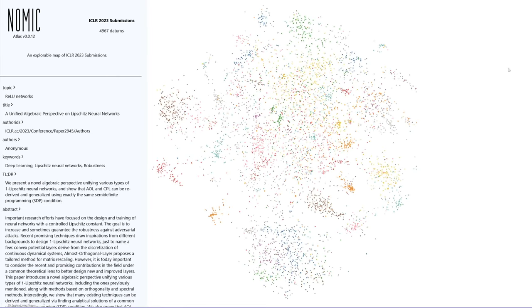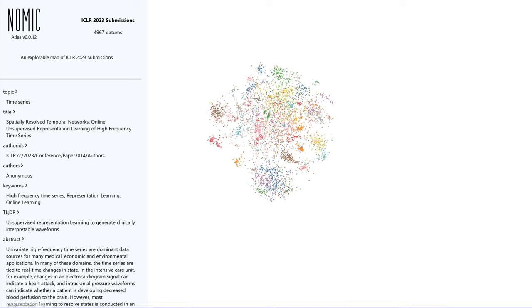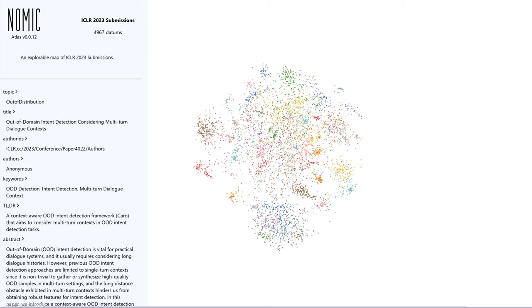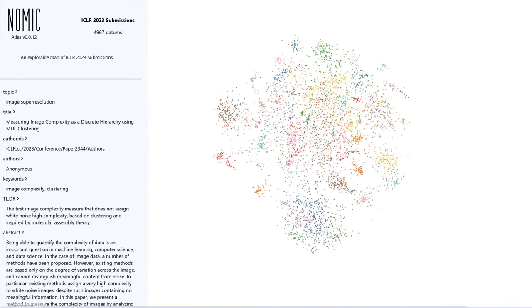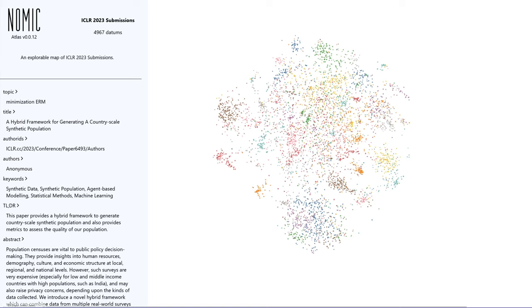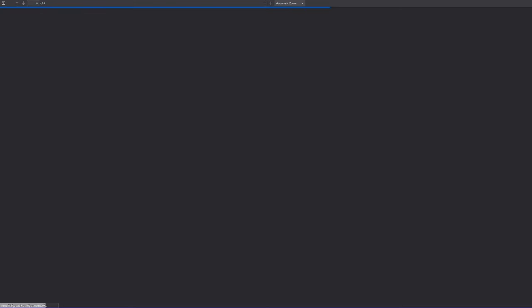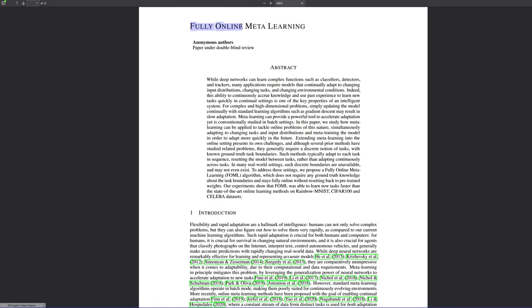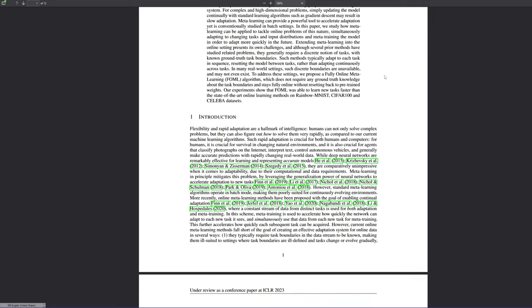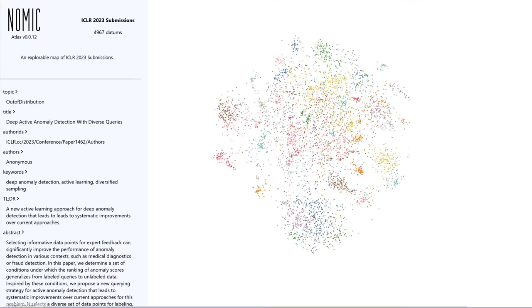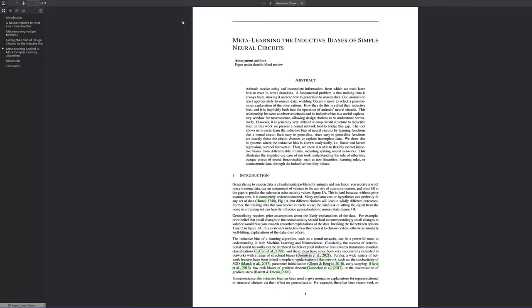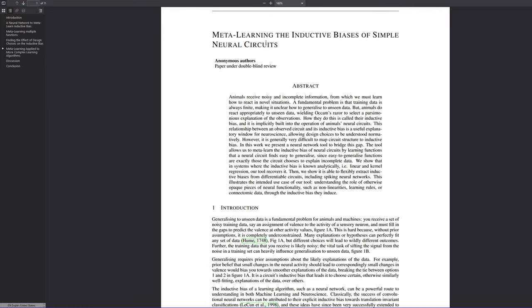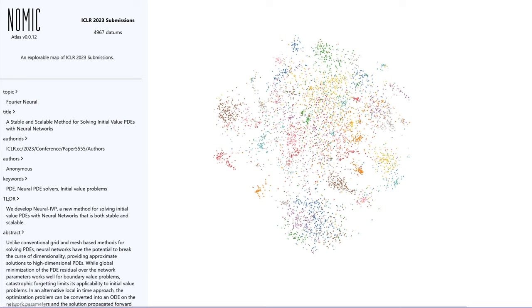A few papers I saw earlier that I want to briefly mention: fully online meta-learning, which combines online/continual learning with meta-learning — a neat paper. Also meta-learning inductive biases and simple neural circuits — lots of cool stuff. This is my first time going through ICLR submissions before they're peer reviewed and accepted or rejected. It was neat to do this.